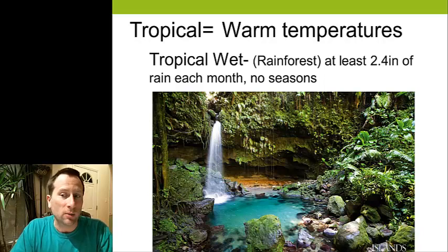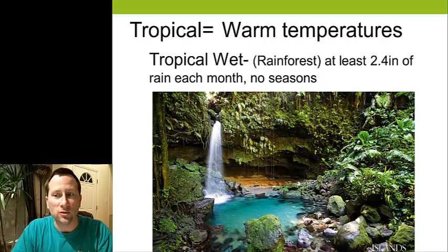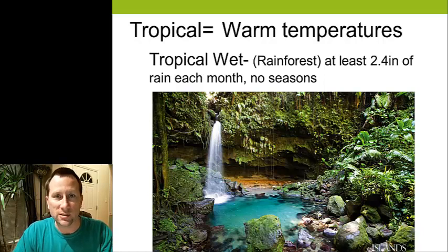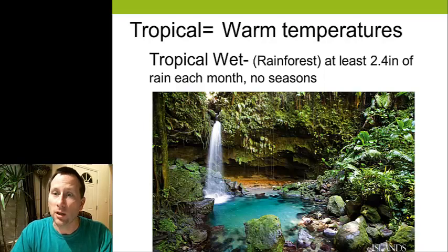What defines a tropical rainforest? They have to have at least just under two and a half inches of rain each month, and there are no seasons, meaning it's the same weather every day, year round.